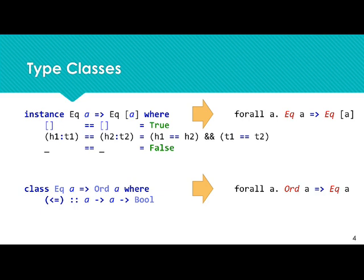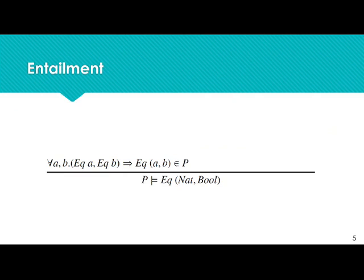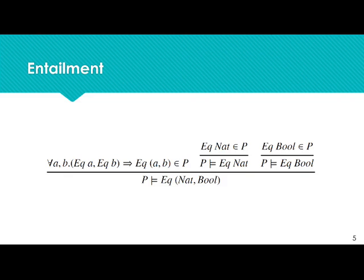Let's take a look at a small example. Say we want to entail the equality on tuples of natural numbers and booleans. We select an axiom from the program theory — in this case one for tuples — which requires us to check both the equality of natural numbers and booleans, both of which are in the program theory, so our constraint is entailed.